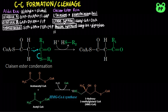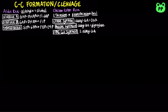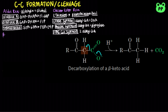In both cholesterol synthesis and ketogenesis, two acetyl-CoA molecules combine to form HMG-CoA, or hydroxymethylglutaryl-CoA, by the enzyme HMG-CoA synthase. Another reaction that forms or breaks carbon-carbon bonds is the decarboxylation of beta-keto acids, in which a carbanion is formed as carbon dioxide leaves.